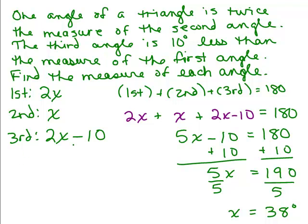So what does this mean? This means if x is 38, then this would have been 38 degrees. And the first one, one angle is twice the measure of that second angle, so twice that would be 76. And the third one was 10 less than the first angle. So if the first angle is 76, 10 less than that would be 66. Of course, what you could do is actually do 2 times 38 and then minus 10. So it looks like those are the three angles.